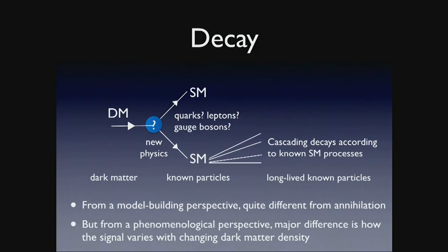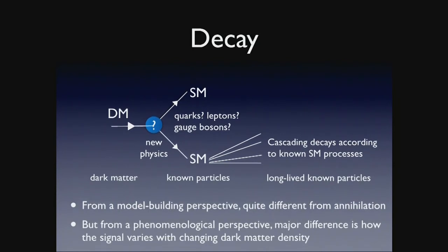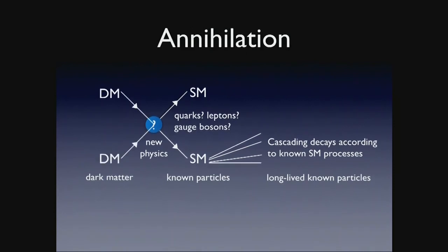What is different between annihilation and decay from a phenomenological perspective is how the signal changes with differing dark matter density. Decay doesn't rely on any collisions between dark matter particles, so if such a signal exists it's just proportional to the total amount of dark matter in a given system. Whereas annihilation is a two-body process, so it scales like the dark matter density squared.